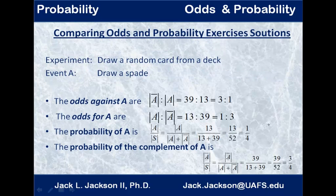Okay, well we're back now, and we see that the experiment was drawing a random card from the deck, and we want to draw a spade. The odds against A are the size of not A to the size of A. There are 39 non-spades and 13 spades.